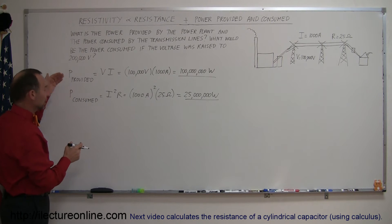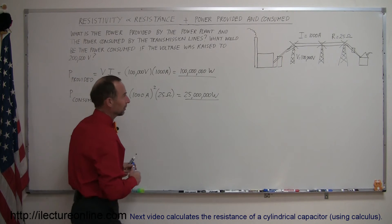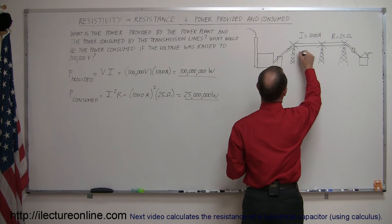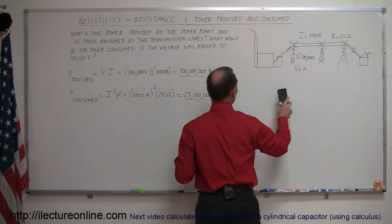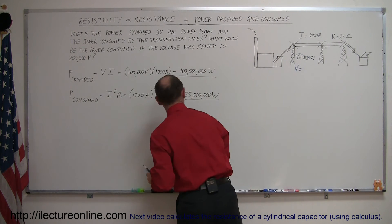And just as an example, let's say that we now correct the problem, or not correct it but make it better, by changing the voltage across the transmission lines not to a hundred thousand volts but we raise it up to two hundred thousand volts.